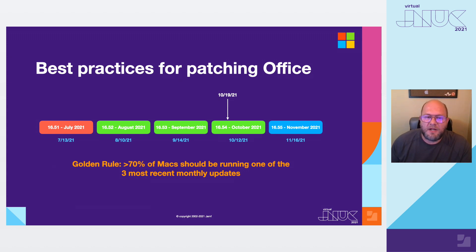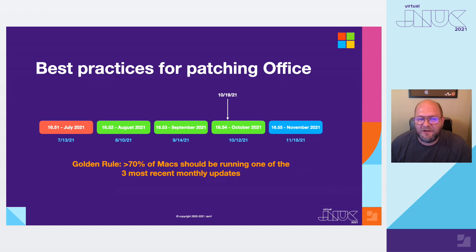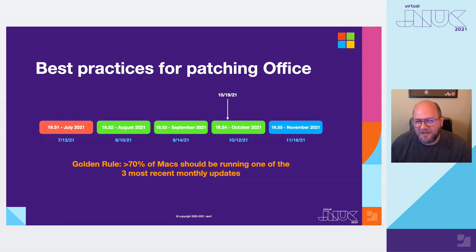I want to switch gears now and talk about the second topic: patching. As most of you know, we have a well-established and predictable rhythm for releasing monthly updates, but you may have a large complex fleet. So a common question is: how quickly should I update to a new release once we've sent it out to the current channel? It's going to be easy for me to say you should update on the day of release, but that's usually not very realistic because you have large fleets. So I wanted to give you some more realistic guidance on how we think about this question.